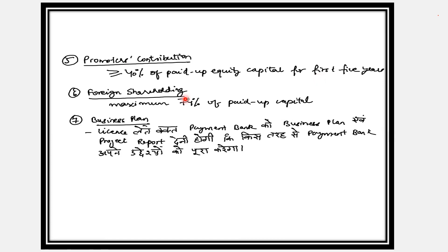Foreign shareholding को लेकर RBI की guidelines — विदेशी companies भी payment banks में अपनी capital लगा सकती हैं और हिस्सेदार हो सकती हैं। लेकिन foreign shareholding जो maximum allowed है वो 74% है। RBI कहता है कि payment bank की equity capital में foreign shareholding 74% से अधिक नहीं होनी चाहिए। इसका मतलब है कि 26% shareholding Indians या Indian companies के पास होनी चाहिए।